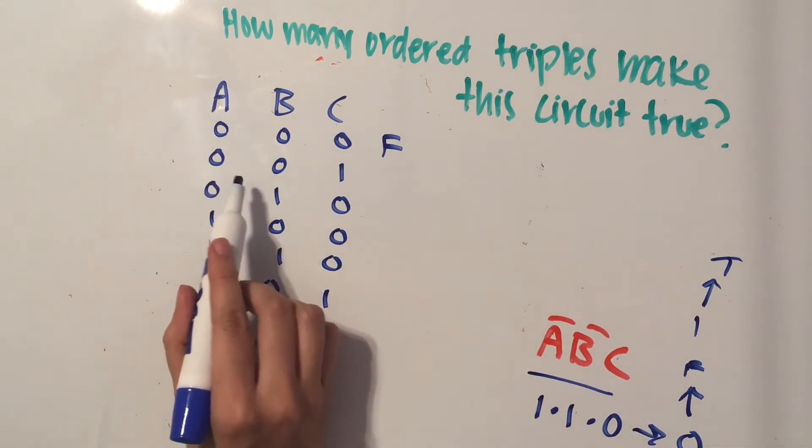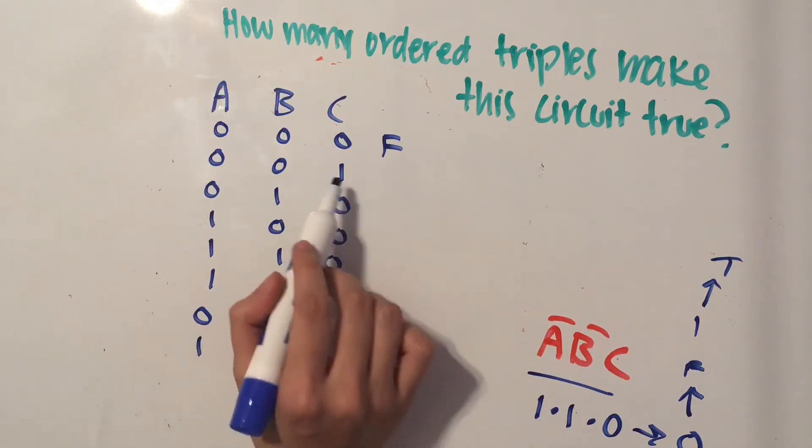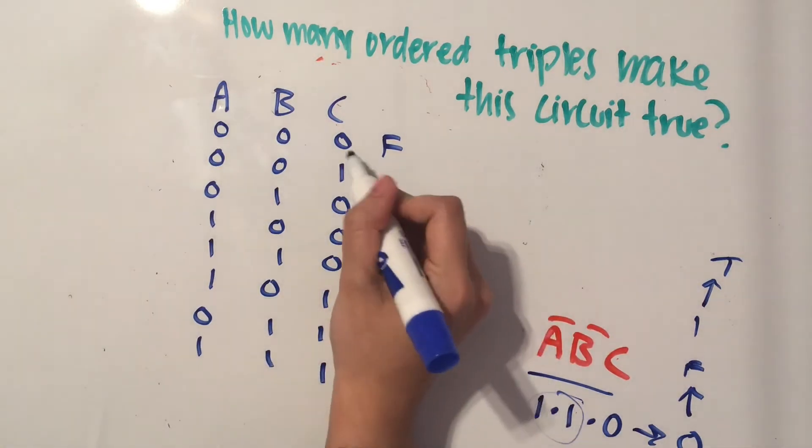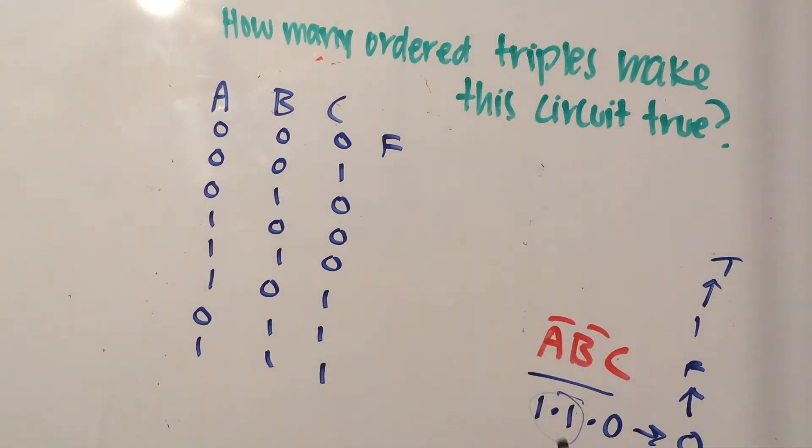Okay, well, what if we try C as one? So A and B are going to stay the same, but we're going to multiply by one now instead of zero because we've changed C, and obviously one times one times one will give us true.